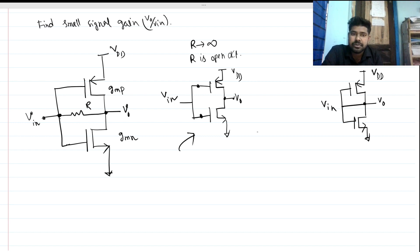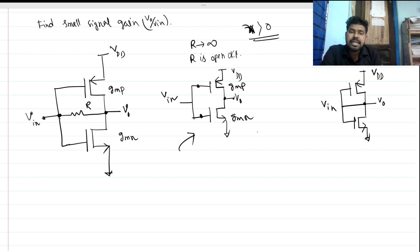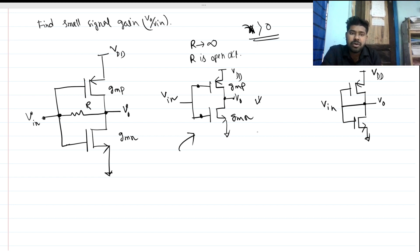We can use the superposition theorem. This is our gmn and this is our gmp. We assume channel length modulation here — lambda is greater than zero — so we must take channel length modulation into account in this problem.